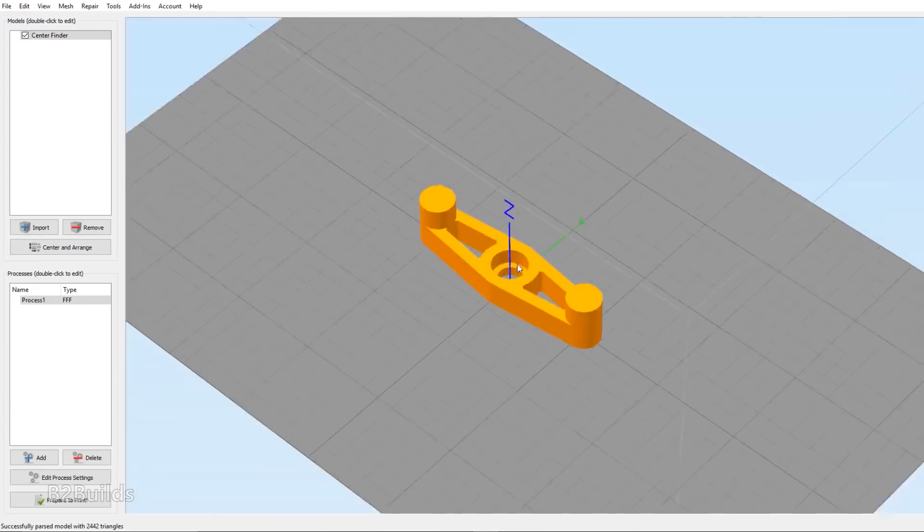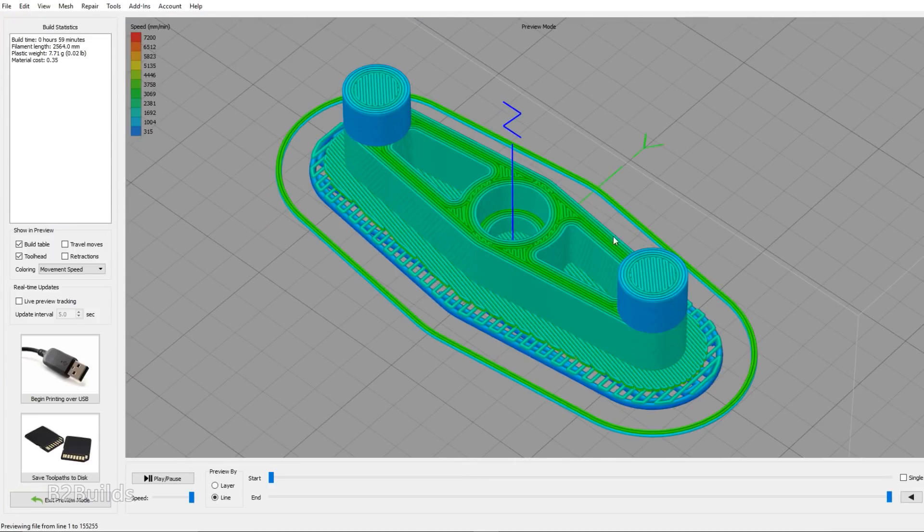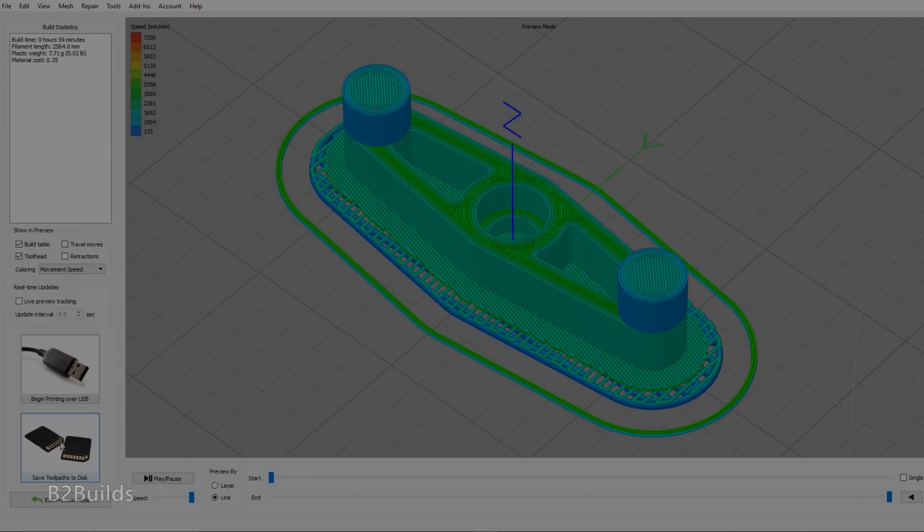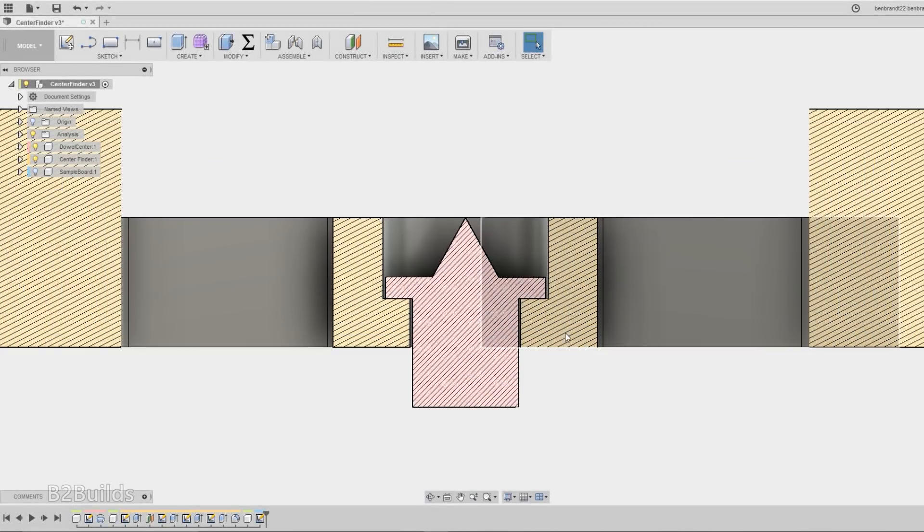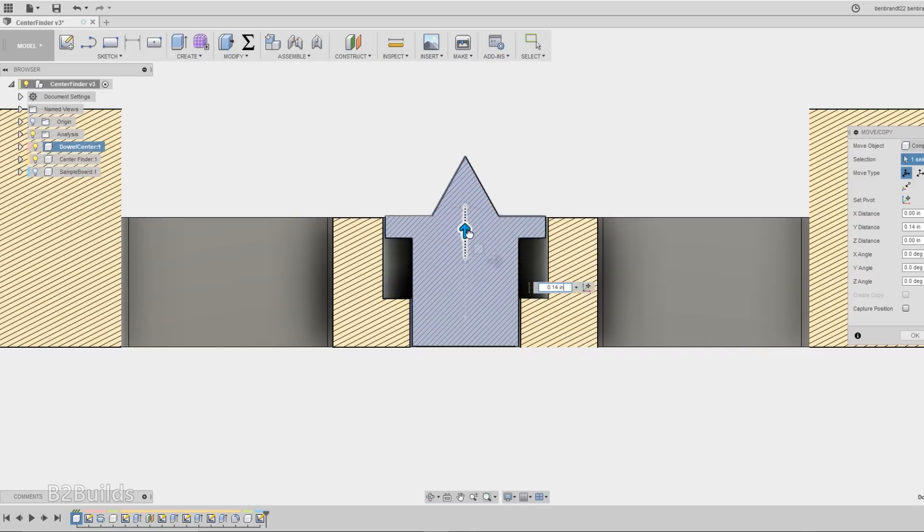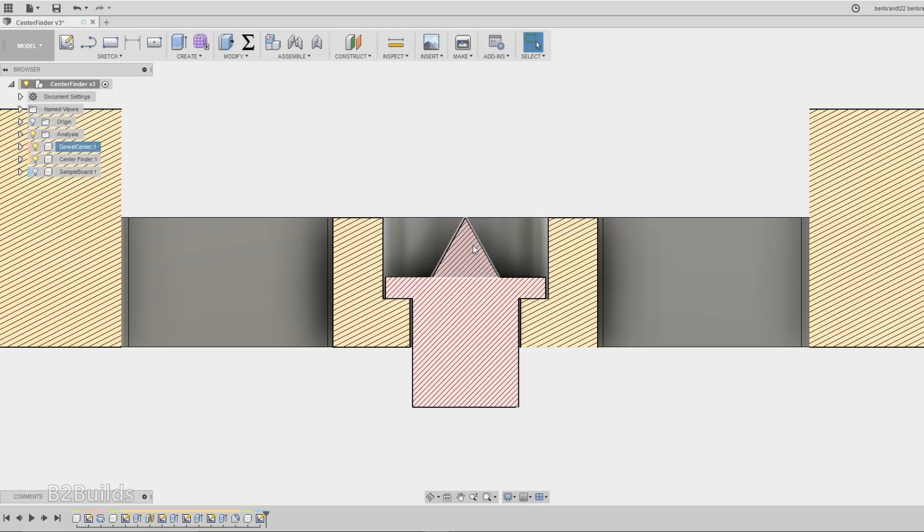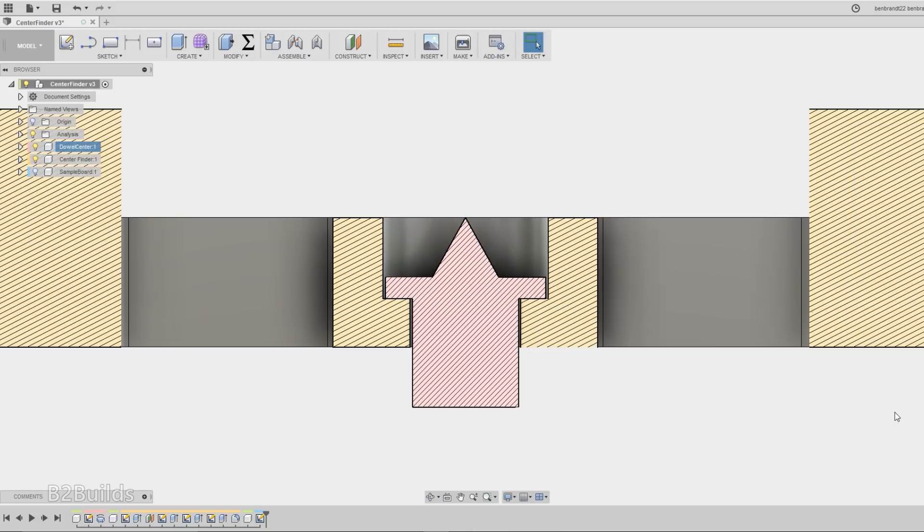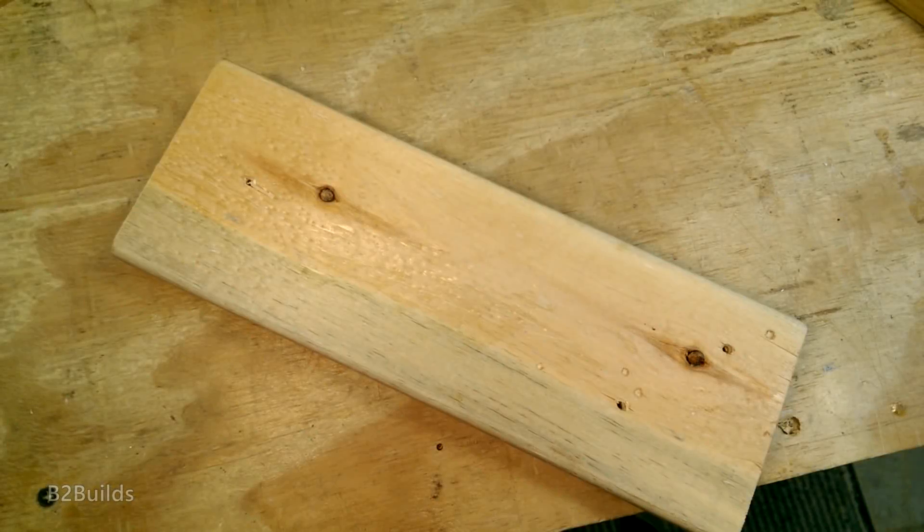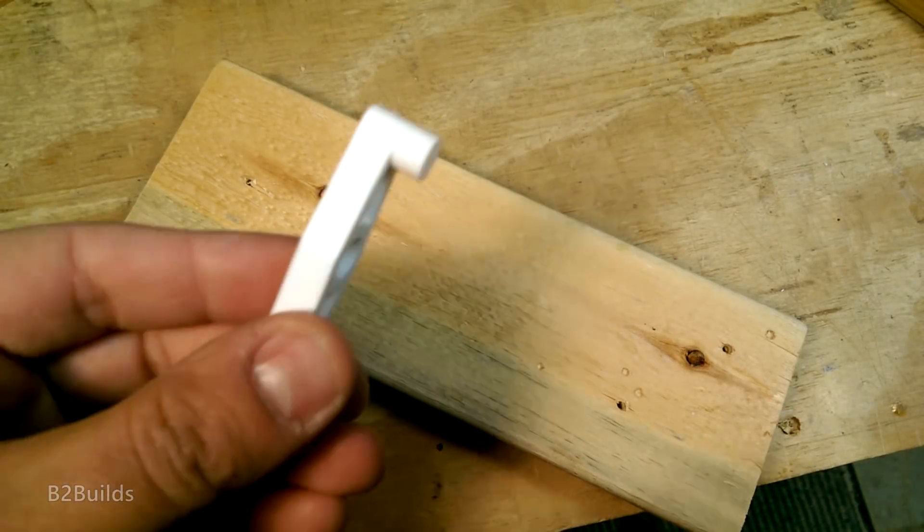I exported to an STL file and sent it off to the 3D printer. If you'd like to try and make one of these yourself, there's a few key dimensions to make note of. The overall thickness of the center finder should be the same as the height of the dowel center minus the point. The depth of the larger hole should be deep enough to enclose the point and this flange sticking out here so that it can be fully retracted and not scratch the wood underneath.